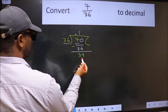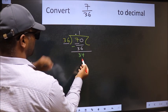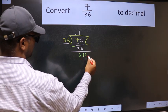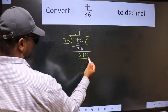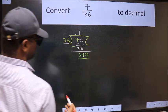Now here we have 34 and here 36. 34 is smaller than 36. And we already have the decimal, so directly take 0. So 340. A number close to 340 in 36 table is,